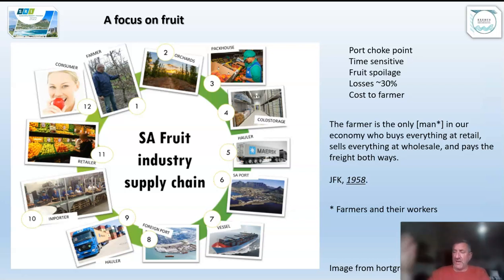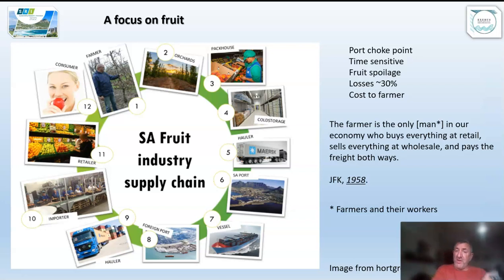There are other extreme events like extreme rainfall and extreme drought. You're all very familiar with the Cape Town drought — the Day Zero drought. Interestingly, the Day Zero drought wasn't the worst drought on record. The difference between the previous time and this time was that there was a much bigger population with a much greater need for water.